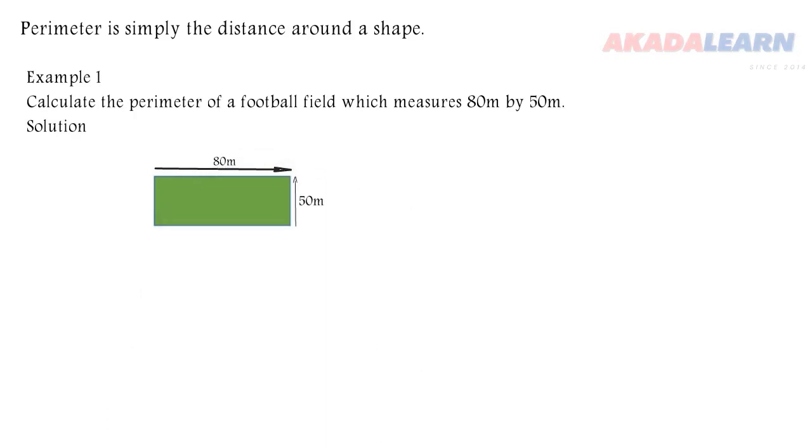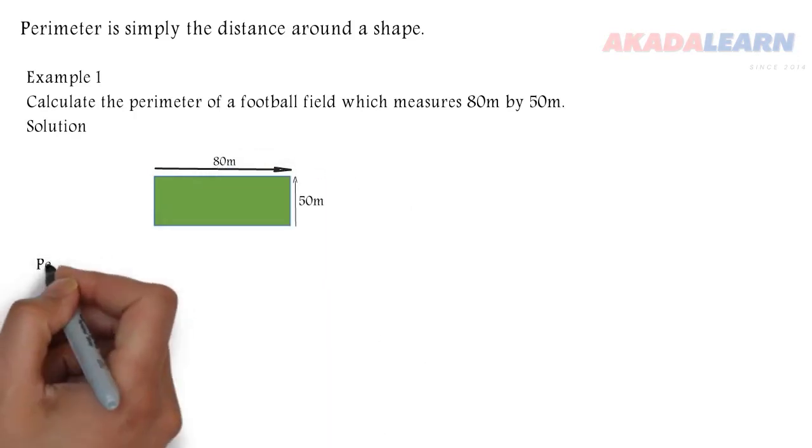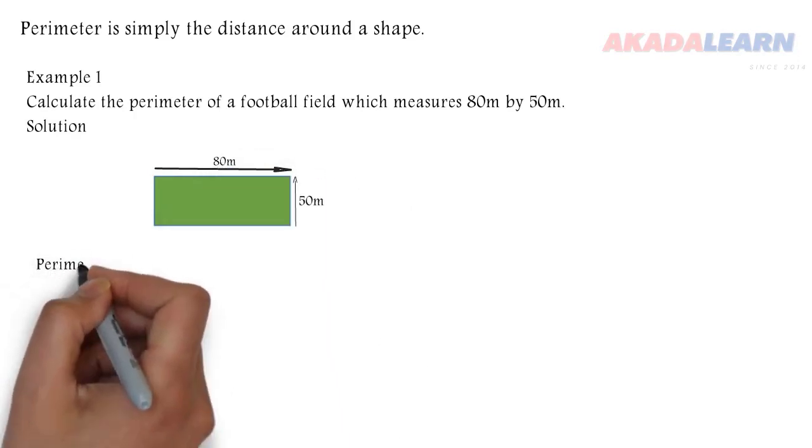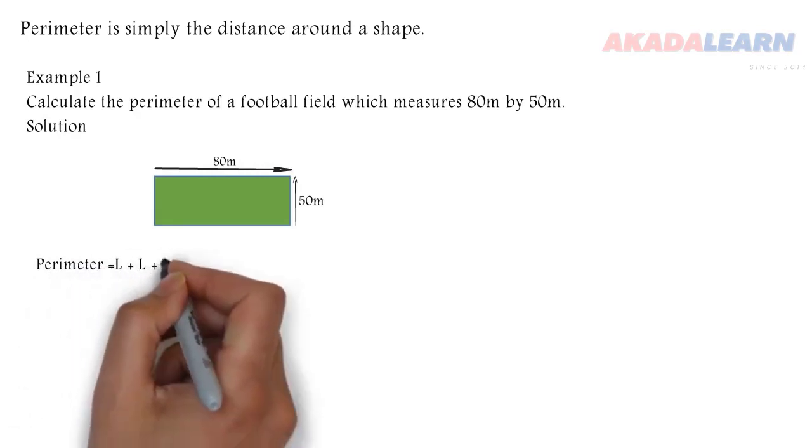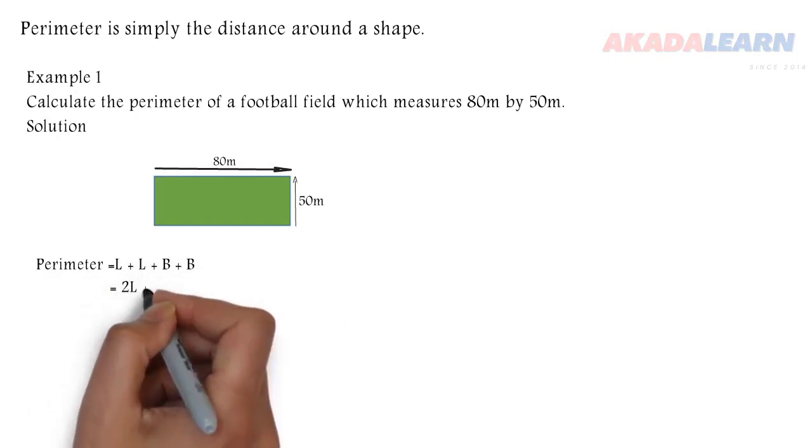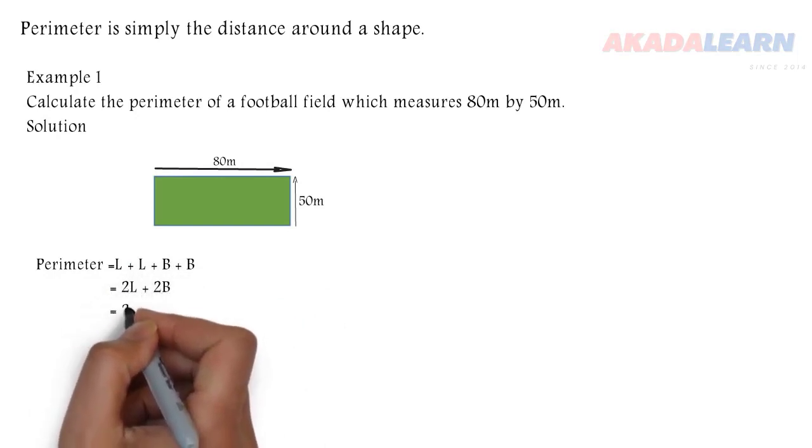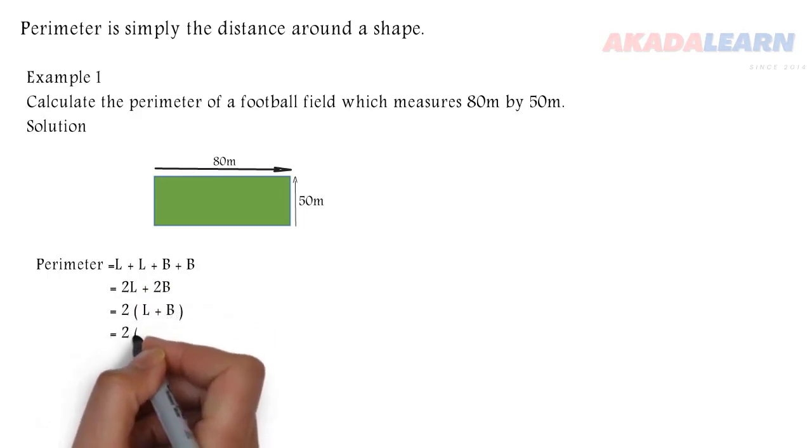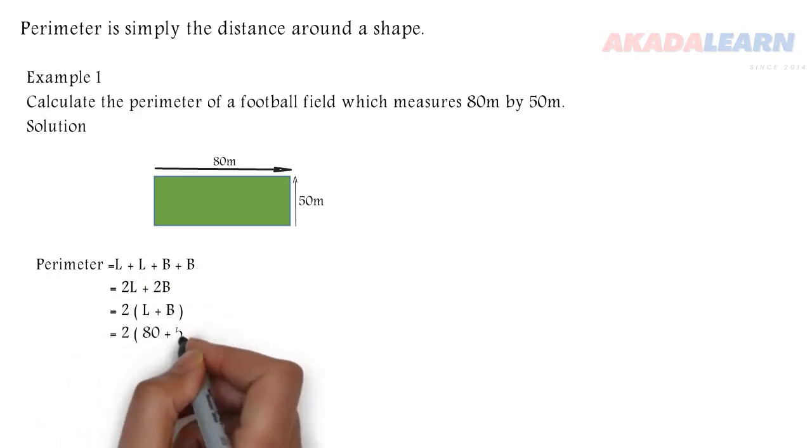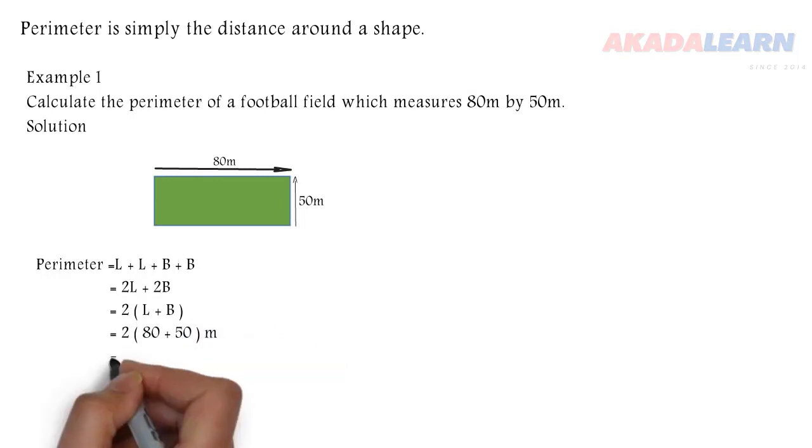L is for length, B is for breadth. Perimeter is equal to L plus L plus B plus B. L plus L is 2L, B plus B is 2B. 2 is common, so I can factor out 2. So, 2 times what? L is 80, B is 50. If I add 80 and 50, I have 130. Multiply 130 and 2, I have 260. So the perimeter is 260 meters.